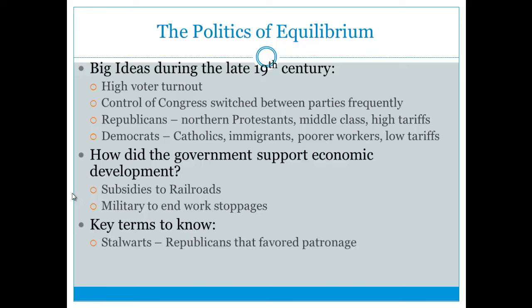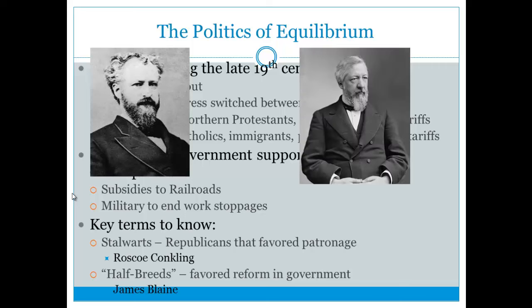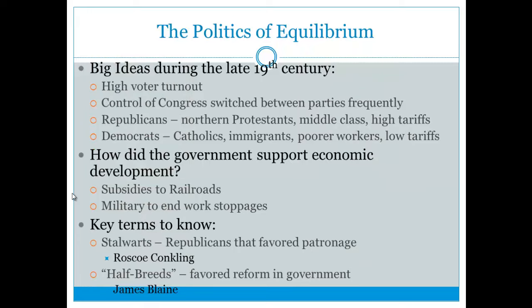Some key terms to know: Stalwarts were Republicans that favored patronage — giving jobs to supporters — and their leader was Senator Roscoe Conklin. Half-Breeds were Republicans that favored reform in the government, and they were led in part by James Blaine, who was a presidential candidate and secretary of state.